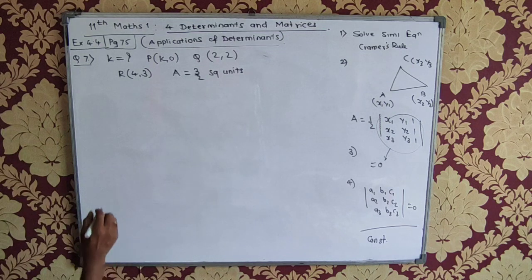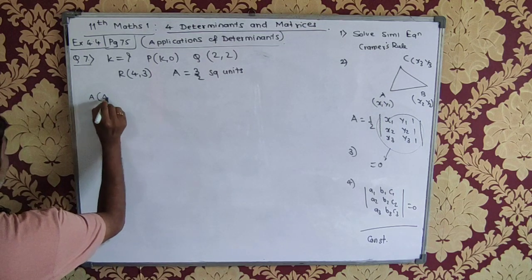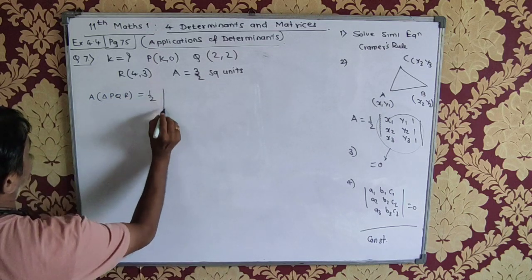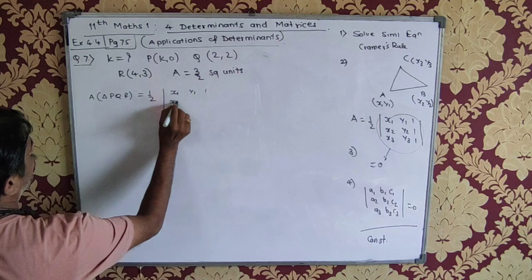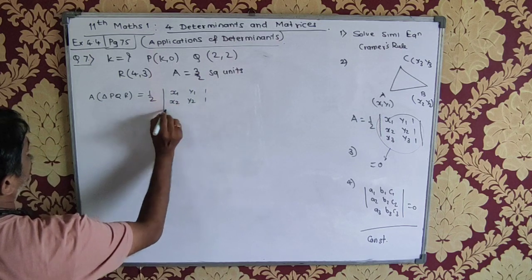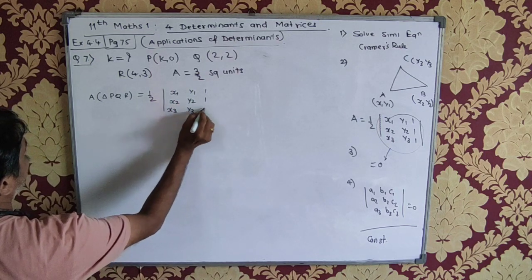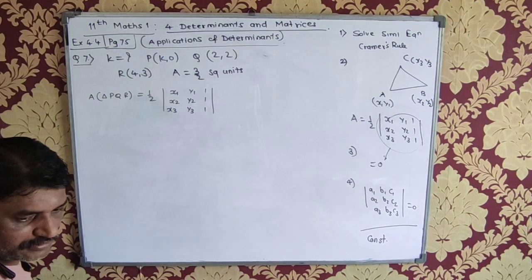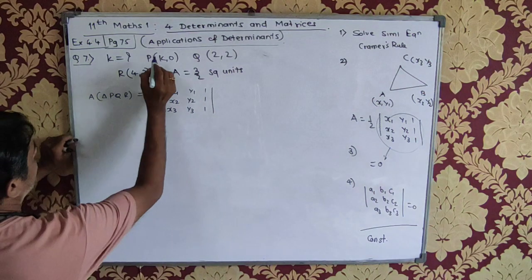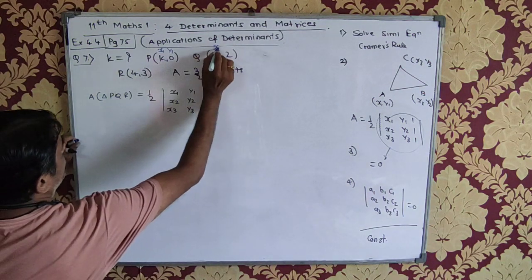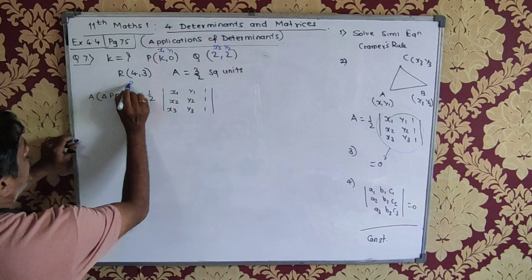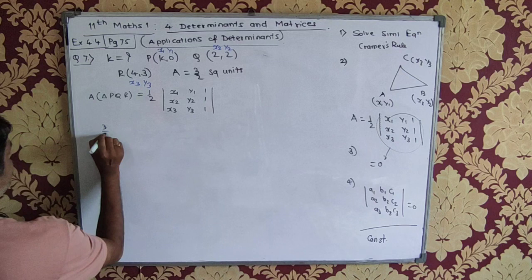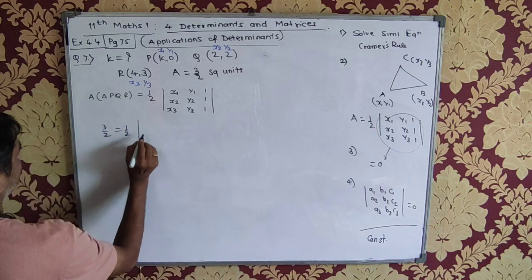That is simple. Here we say, area of triangle PQR is equal to half determinant x1, y1, 1, x2, y2, 1, x3, y3, 1. Here, I would say that this is x1, y1, this is x2, y2 and this is x3, y3. And we already know the area to be 3 by 2 square units.